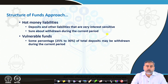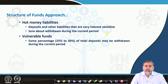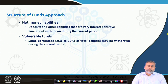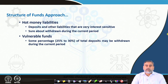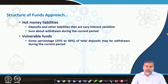For vulnerable funds, there is not a 100% chance the money will be withdrawn, but there is a probability that a certain percentage of total deposits can be withdrawn in the current period — generally around 25 to 30 percent. So in the hot money case there is close to 100% chance of withdrawal, whereas in the second category only around 25 to 30 percent of the total deposits will be withdrawn. That is considered as the vulnerable funds.